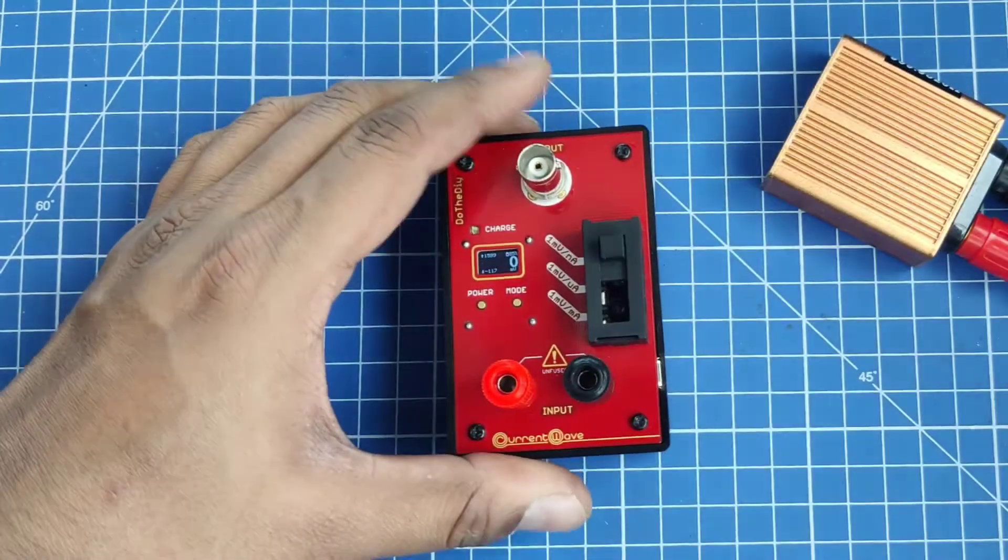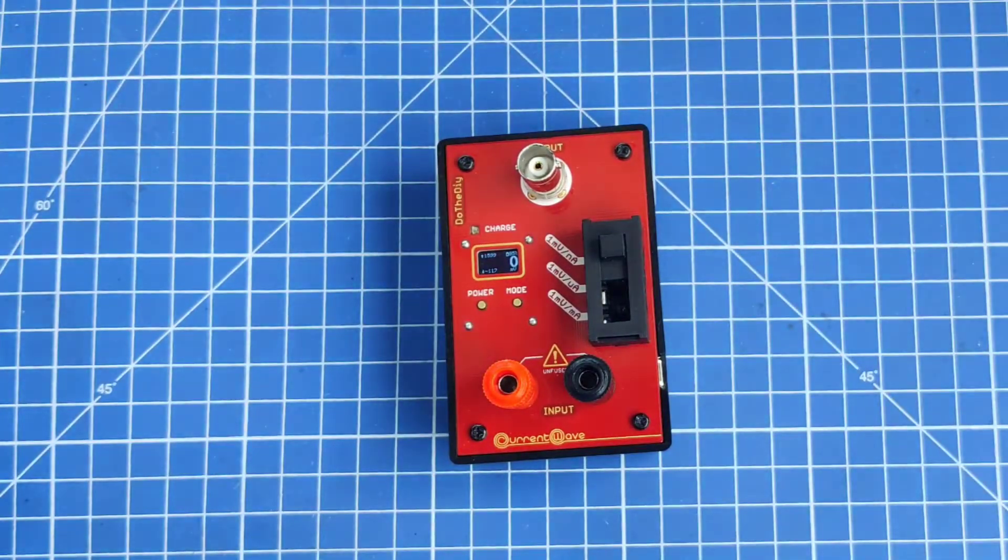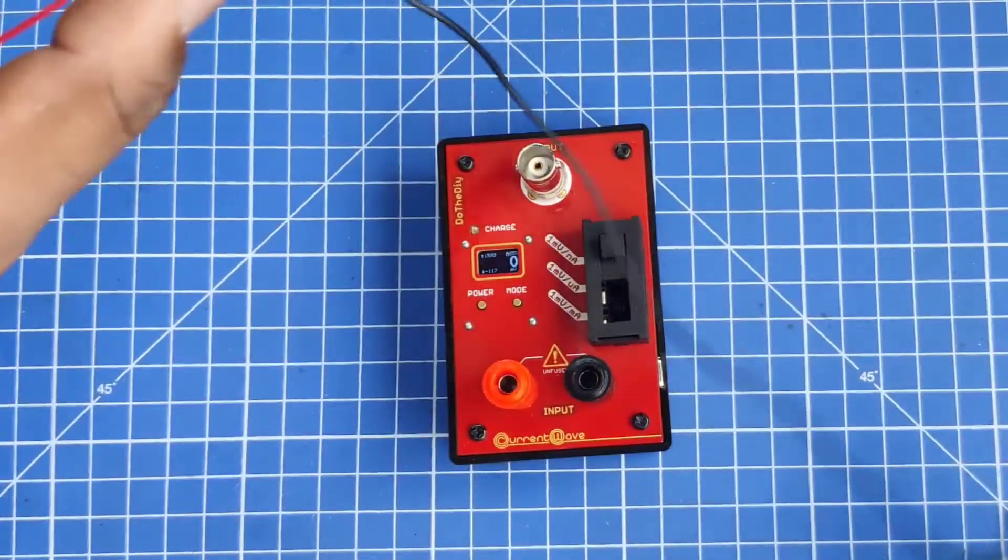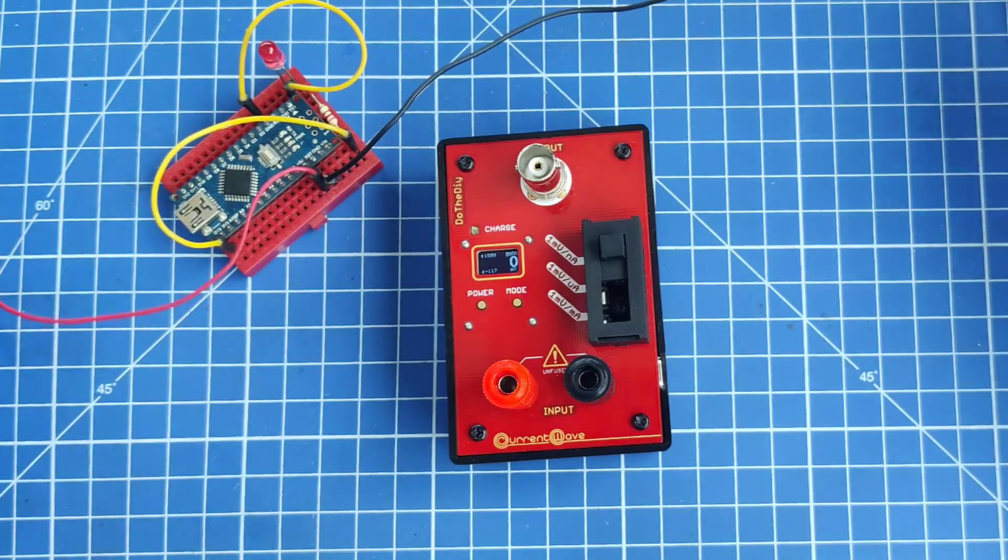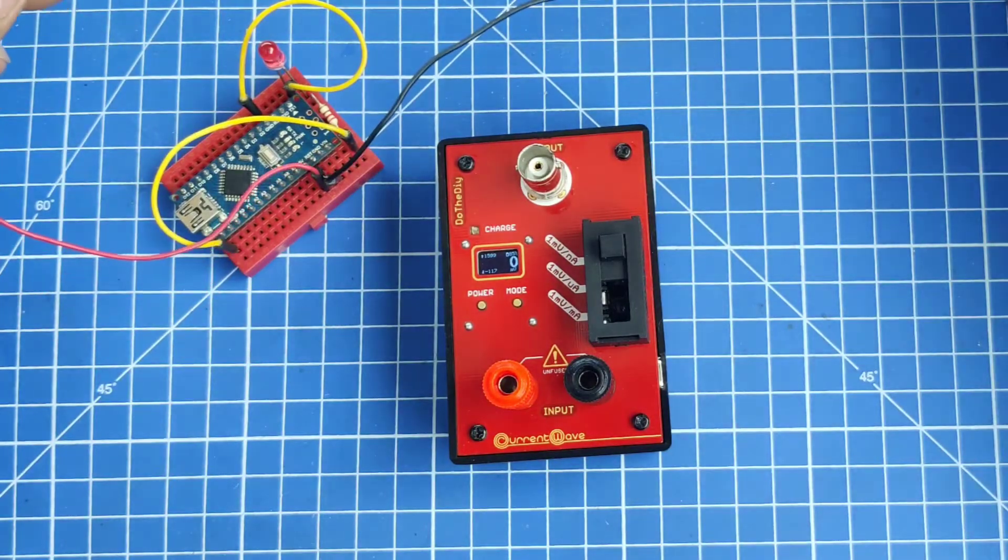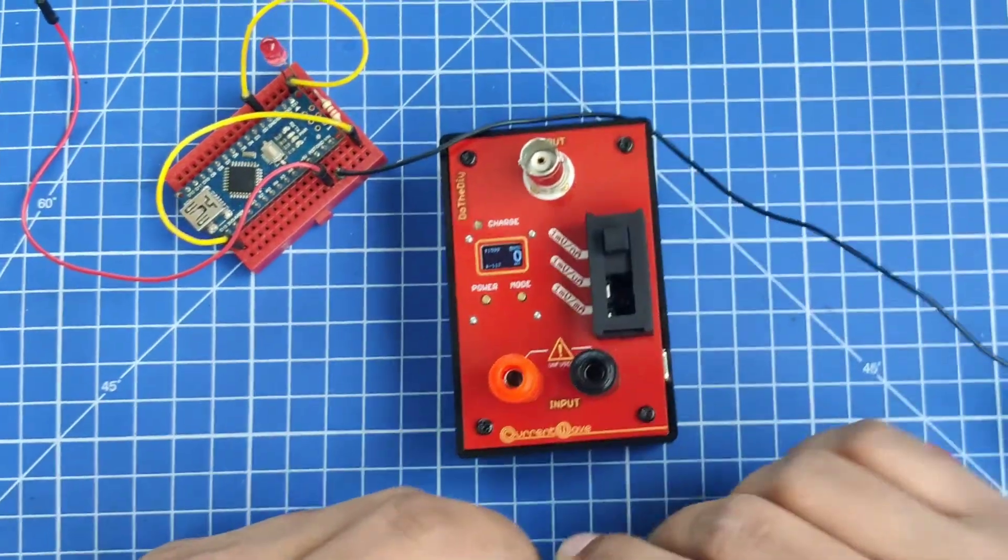This device, as I said, puts a very low burden voltage, so it's very useful when we are measuring the current consumption of a small device such as a microcontroller or IoT device. I will try to show an example here. I have this Arduino board. I will quickly connect this.